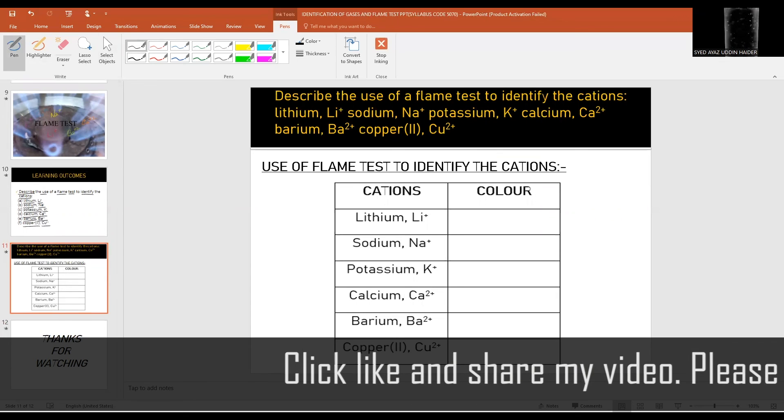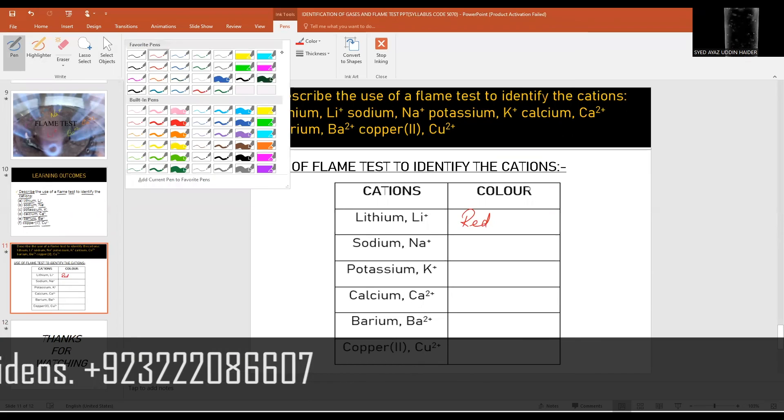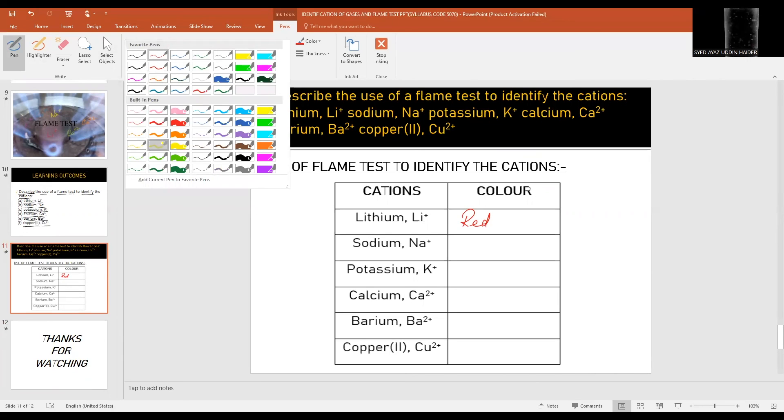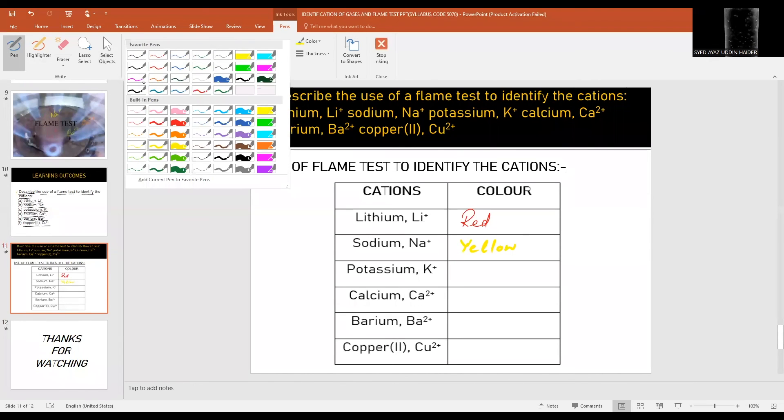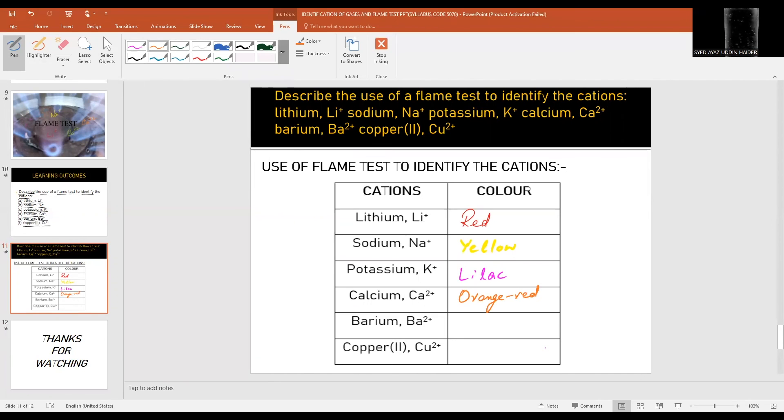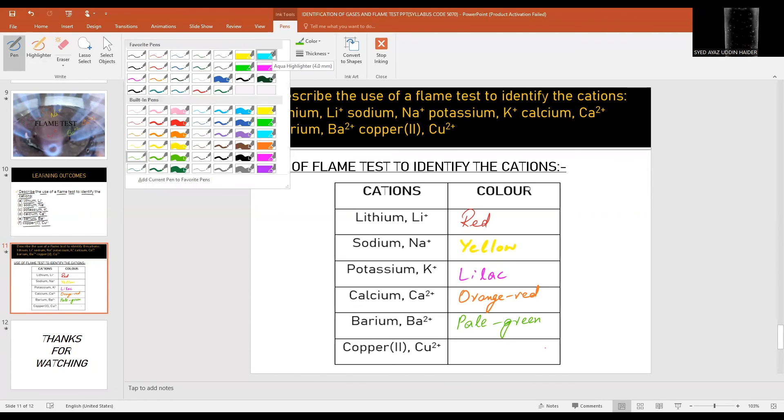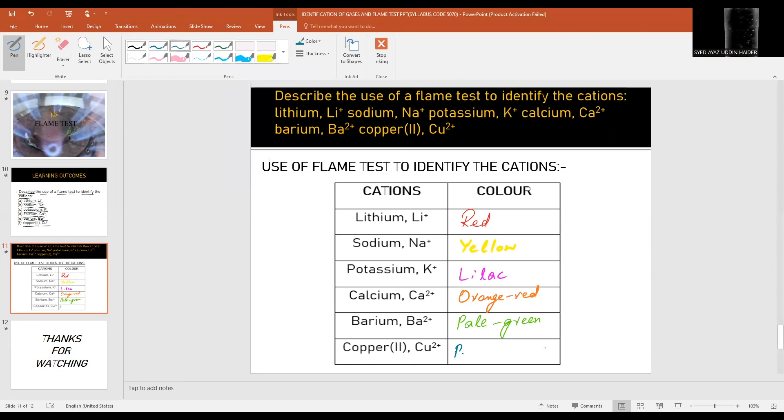So lithium gives a red color in flame. Sodium or Na+ ion gives yellow color in the flame. Potassium gives lilac color. Calcium Ca2+ gives orange red color. Barium gives green color. Copper will give blue green color.